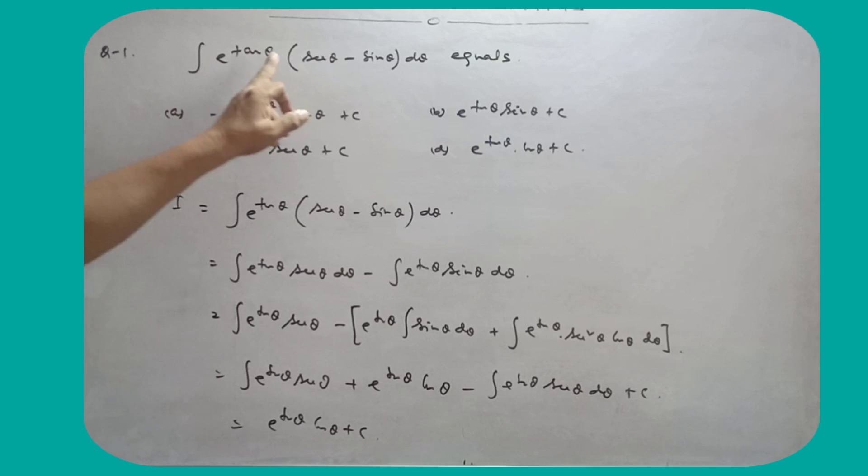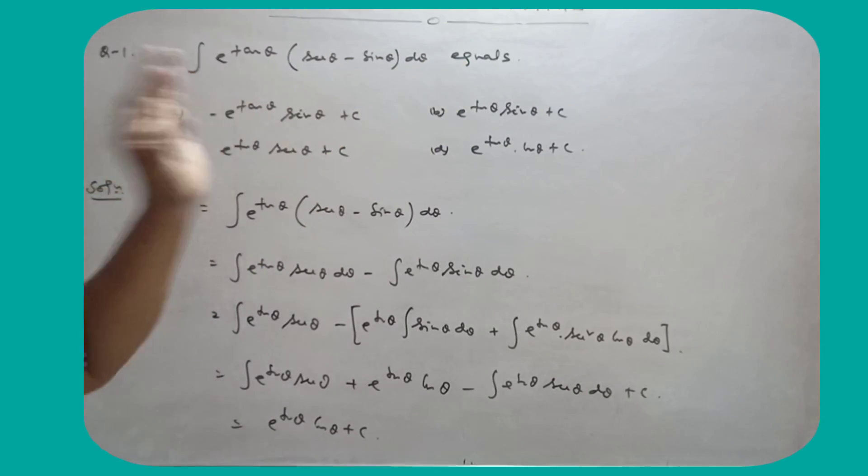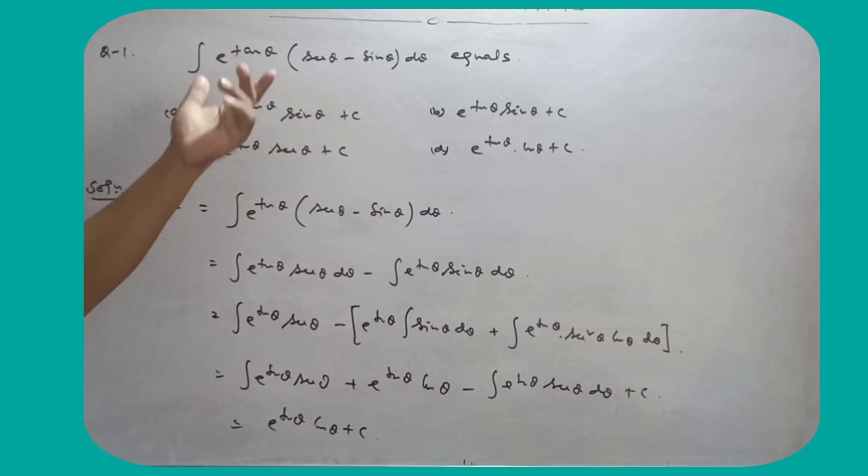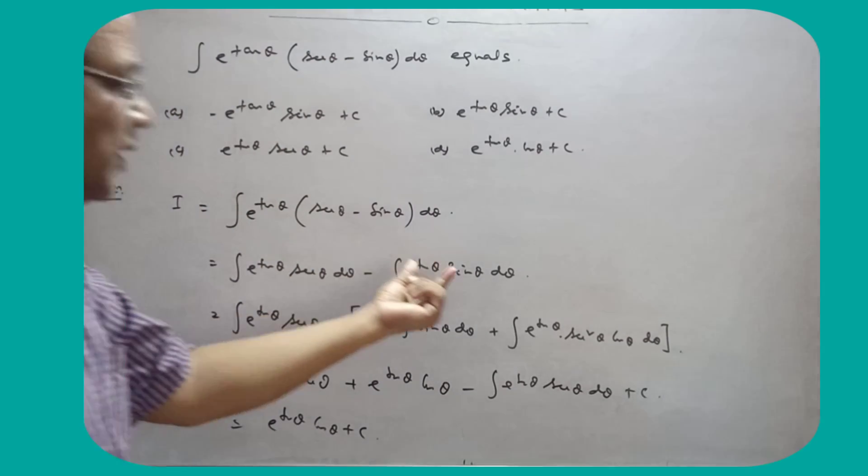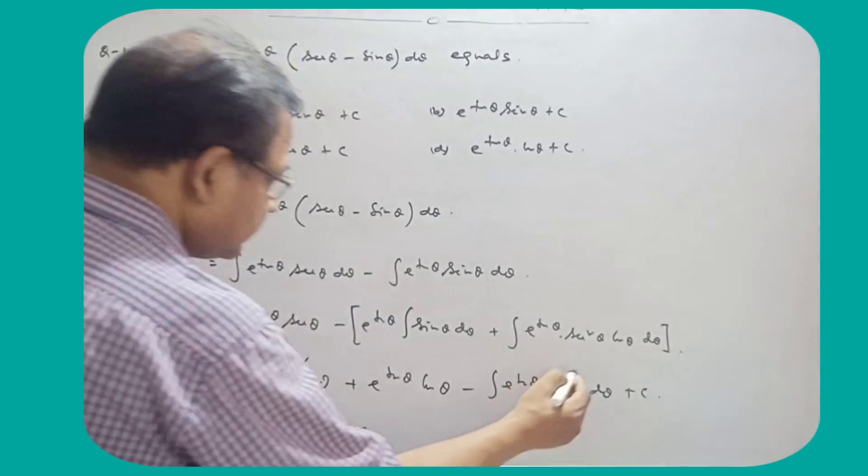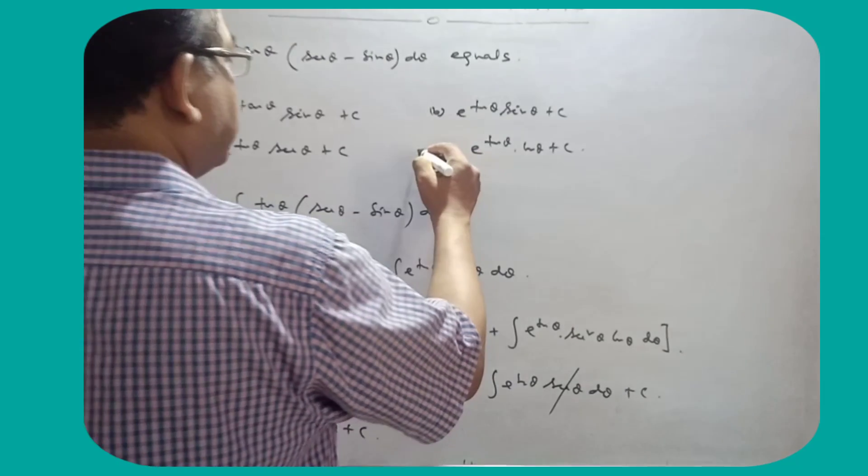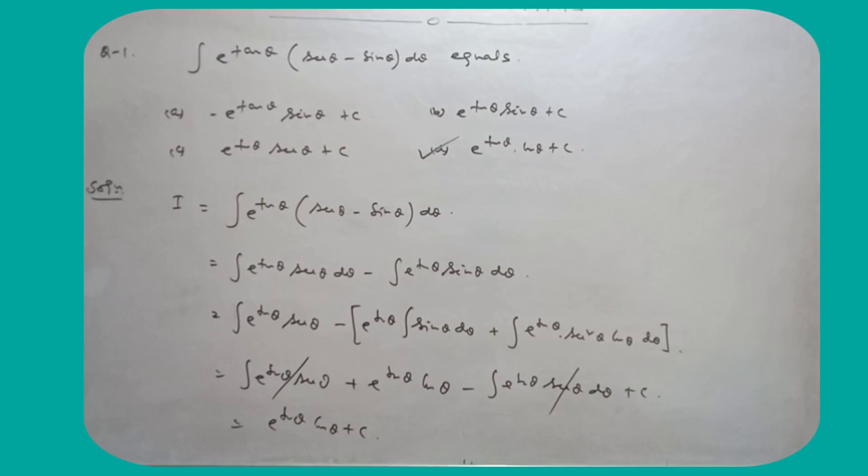Now, so this is e to the power 10 theta into 6 theta minus 7 theta d theta equals. This integration is a very good integration. Separate these two. After separating, take this as first, apply integration by parts. After applying, see, these two cancel. So the C is cancelled, so that is e to the power 10 theta into 1 theta plus C. So this is the right option.